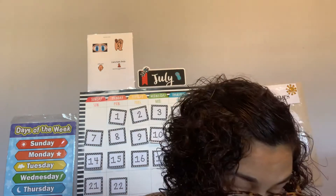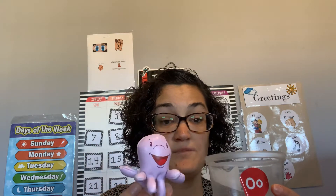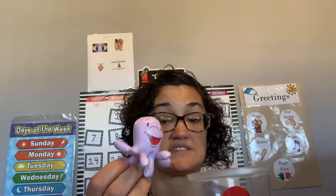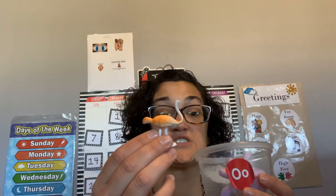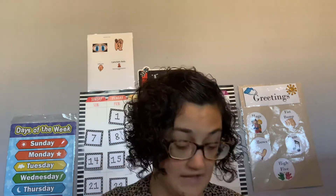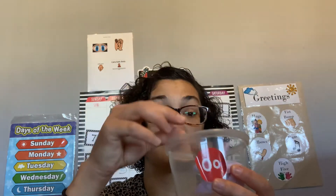Great job. So I have my letter buckets. We are going to go over each little toy object that I have for the letter bucket, say what it is, and put it in the letter bucket. The first letter we are going to start with is O — remember, O makes two sounds. Here is my letter O bucket. Octopus goes in the O bucket. Ostrich goes in the O bucket. Otter goes in the O bucket.